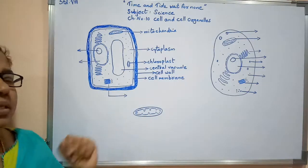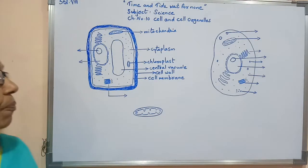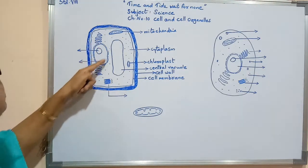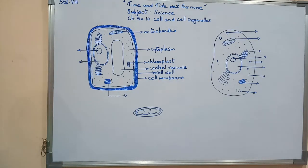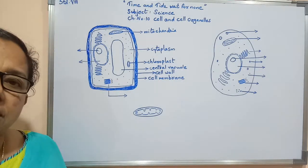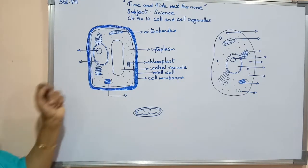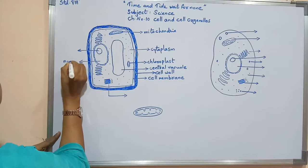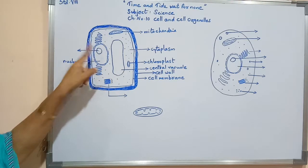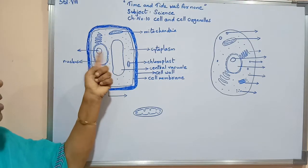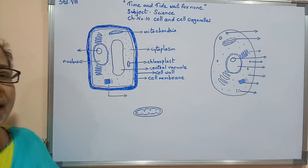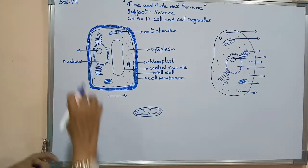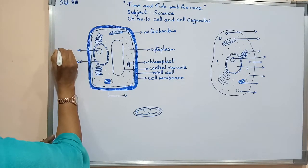This is the most important organelle of the cell. This is known as the nucleus. Inside the nucleus, an important organelle is also present — this is known as the nucleolus.